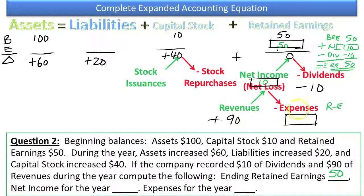So this would be $10. The formula for net income is revenues minus expenses. We know the revenues to be $90. We don't know the expenses. That's what we're trying to find out. And our net income is $10. $90 minus something equals $10. That has to be expenses of $80. Let's go back and look at our question. Net income for the year is $10. And expenses for the year are $80.